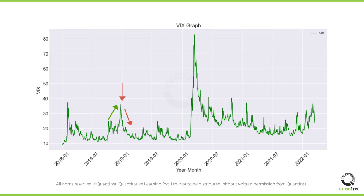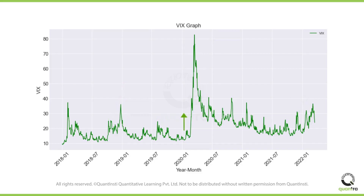Similarly, during the COVID-19 pandemic declaration, the VIX rose sharply, and it touched the level of 80. And then it declined sharply as well. During the Russia-Ukraine conflict, the VIX has started increasing. Thus, when you think that the volatility will increase, you can go long on the VIX derivatives. And when you think that the volatility will reduce, you can short VIX derivatives.